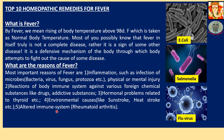What are the reasons of fever? The most important reasons are: 1. Inflammation such as infection of microbes — bacteria, virus, fungus, protozoa, etc. — or physical or mental injury. 2. Reactions of the body's immune system against various foreign chemical substances like drugs, addictive substances, etc. 3. Hormonal problems related to thyroid, etc. 4. Environmental causes like sun stroke, heat stroke. 5. Altered immune system such as found in rheumatoid arthritis. On the right hand side there are a few images of microbes.